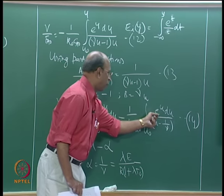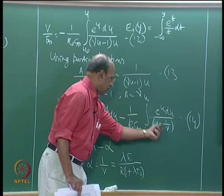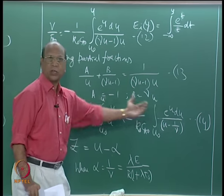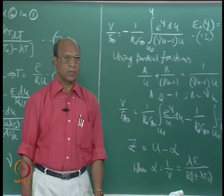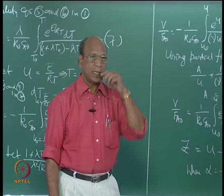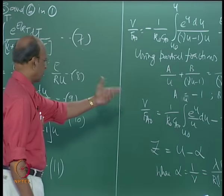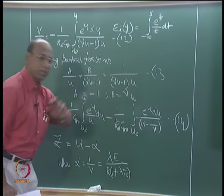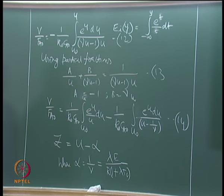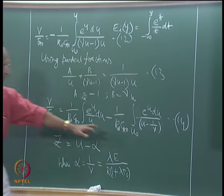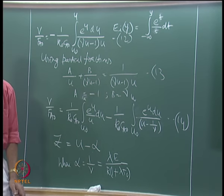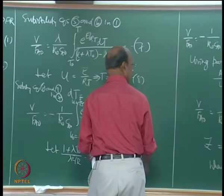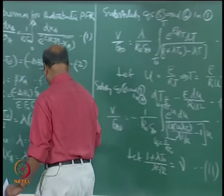With the Z substitution, the entire expression will contain e^Z / Z, with e^alpha taken out as a constant. The limits become Z_0 and Z directly. Then this gives us the exponential integrals directly.